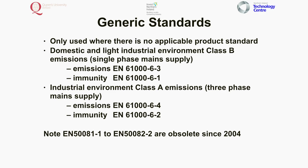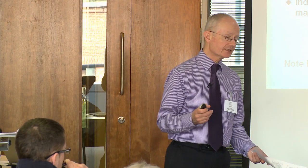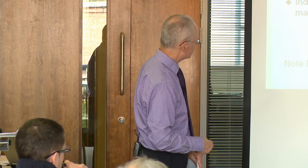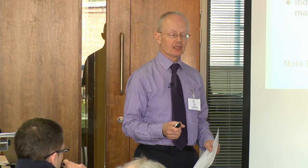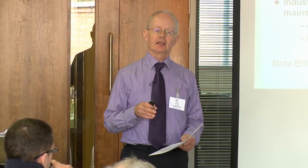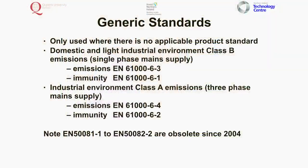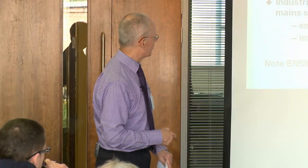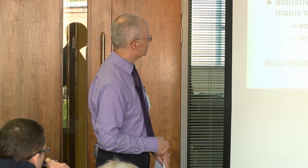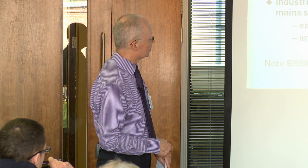If you can't find a product standard, then the default is to go to the generic standards. You only use those when you can't find the appropriate standard, and luckily there's only four of those. They break down into the domestic and light industrial environment, which for emissions is Class B. As a simple definition: if it's going into somewhere and supplied from a domestic mains socket, the chances are it's going to be Class B.